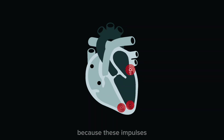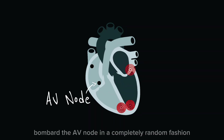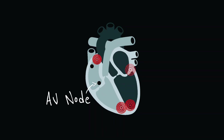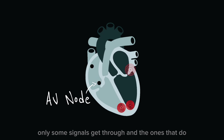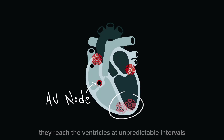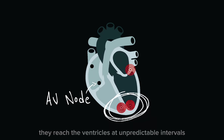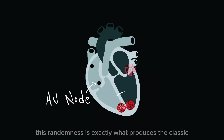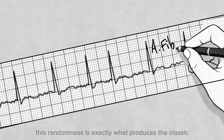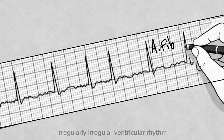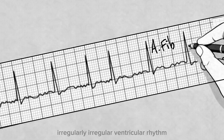Because these impulses bombard the AV node in a completely random fashion, only some signals get through. And the ones that do reach the ventricles at unpredictable intervals. This randomness is exactly what produces the classic irregularly irregular ventricular rhythm.